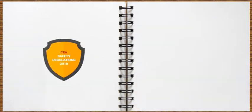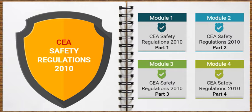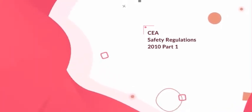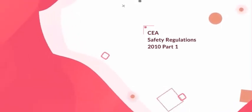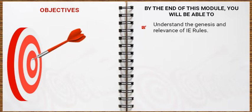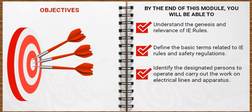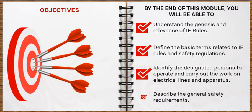Learning Path: This session will be divided further into four modules, which will help you understand each concept better and at your own pace. Let us begin with the first module. By the end of this module, you will be able to understand the genesis and relevance of IE rules, define the basic terms related to IE rules and safety regulations, identify the designated persons to operate and carry out work on electrical lines and apparatus, and describe the general safety requirements.